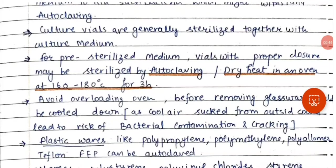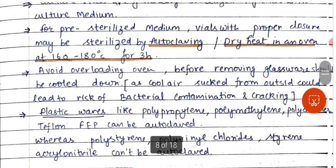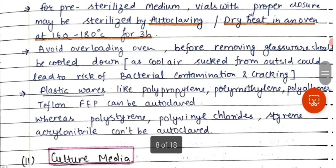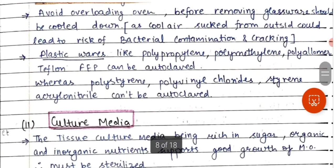In a hot air oven, the temperature used is 160 to 180 degrees Celsius. Avoid overloading the oven. Before removing the glassware, it should be cooled down, as cool air sucked from outside could lead to the risk of bacterial contamination and cracking. Plastic wares like polypropylene, polymethylene, poly allomer, and Teflon FEP can be autoclaved.